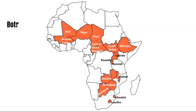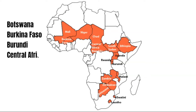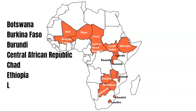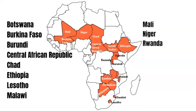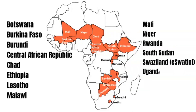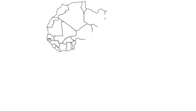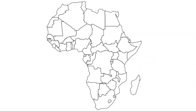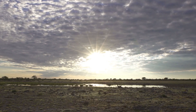Botswana, Burkina Faso, Burundi, Central African Republic, Chad, Ethiopia, Lesotho, Malawi, Mali, Niger, Rwanda, South Sudan, Swaziland — which is now called Eswatini — Uganda, Zambia, and Zimbabwe.